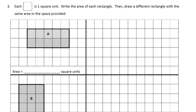Each one of these — each square is one square unit. Write the area of each rectangle, then draw a different rectangle with the same area in the space provided. Here's A — this is one, two, three, four, five, so it's two rows of five. It's 10 square units.